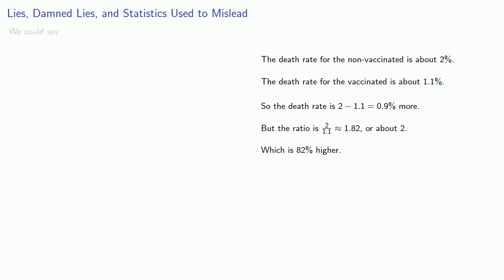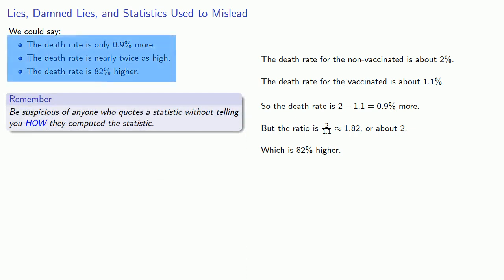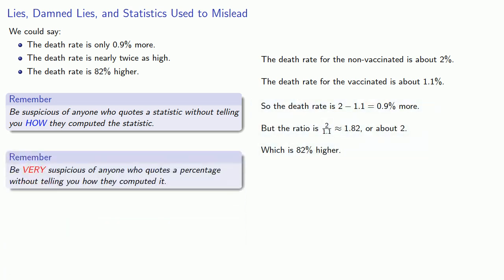And what this means is that we can say three totally different things that cause three totally different perceptions. We could say that the death rate is only 0.9% more. Or we could say the death rate is nearly twice as high. Or we could say the death rate is 82% higher. And this leads to another important way to ferret out a conspiracy. Be suspicious of anyone who quotes a statistic without telling you how they computed the statistic. And in particular, be very suspicious of anyone who quotes a percentage without telling you how they computed it.